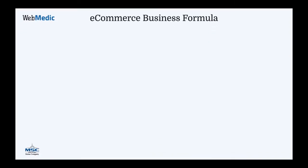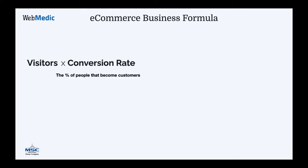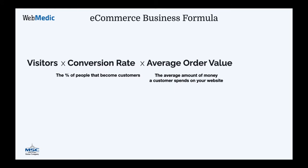Here is the e-commerce business formula: visitors multiplied by conversion rate, multiplied by average order value equals your revenue. There is no other way to grow your online sales other than improving these three variables. On the left side, this business has 30,000 visitors that converts at 1% — meaning every 100 people, one person becomes a customer — and that customer on average spends $100, so this business makes $30,000.